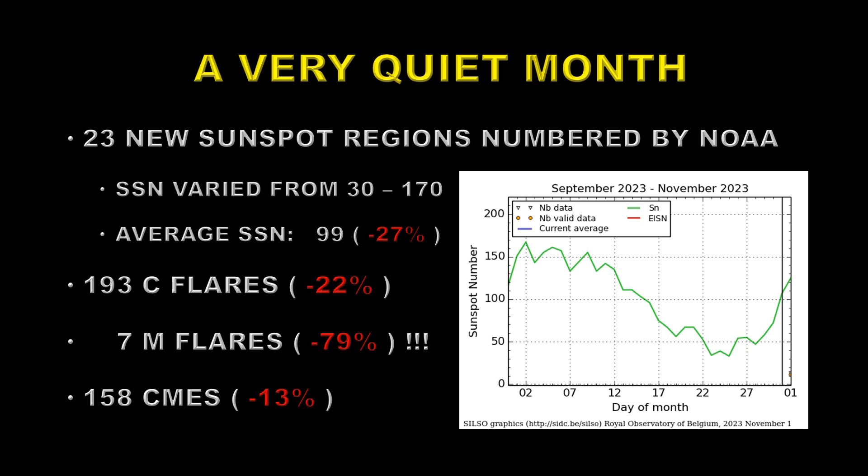Overall, October was a very quiet month, somewhat surprisingly. We had just 23 new sunspot regions numbered by NOAA in the month. The sunspot number varied from 130 to 170, and the average sunspot number was 99 — that's down 27% from September.